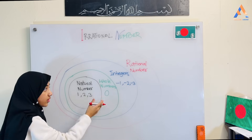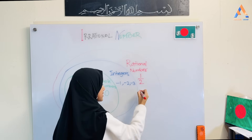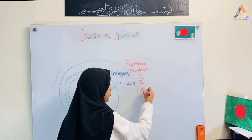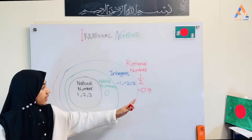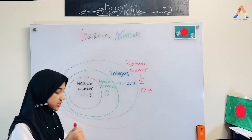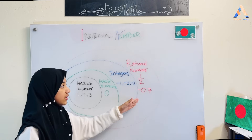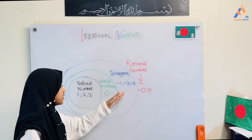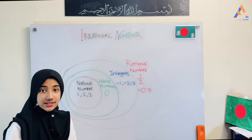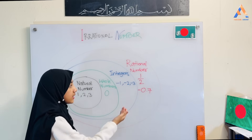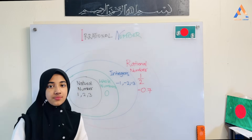Rational numbers include integers, whole numbers, and natural numbers, but also fractions like one-half, and decimals like 0.7. So rational numbers include natural numbers such as 1, 2, 3; whole numbers such as 0, 1, 2, 3; integers such as negative 1, negative 2, negative 3, 0, 1, 2, 3; as well as fractions and decimals.